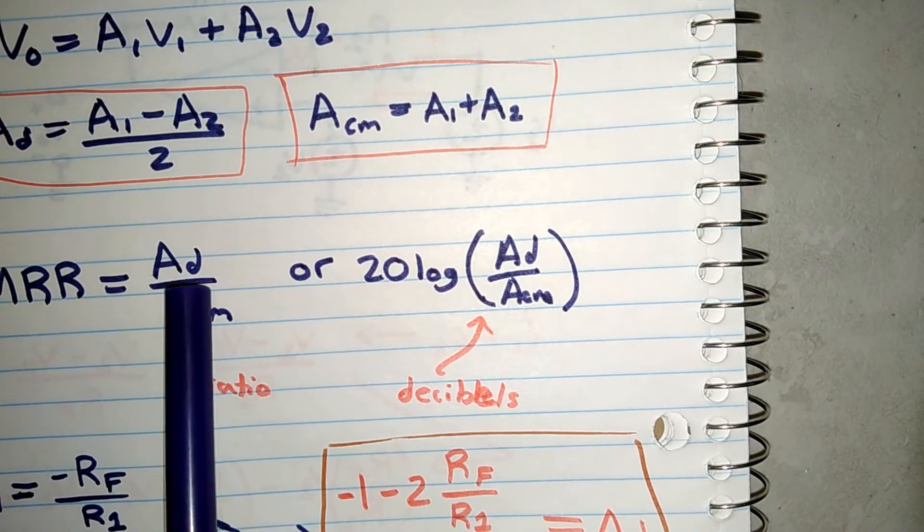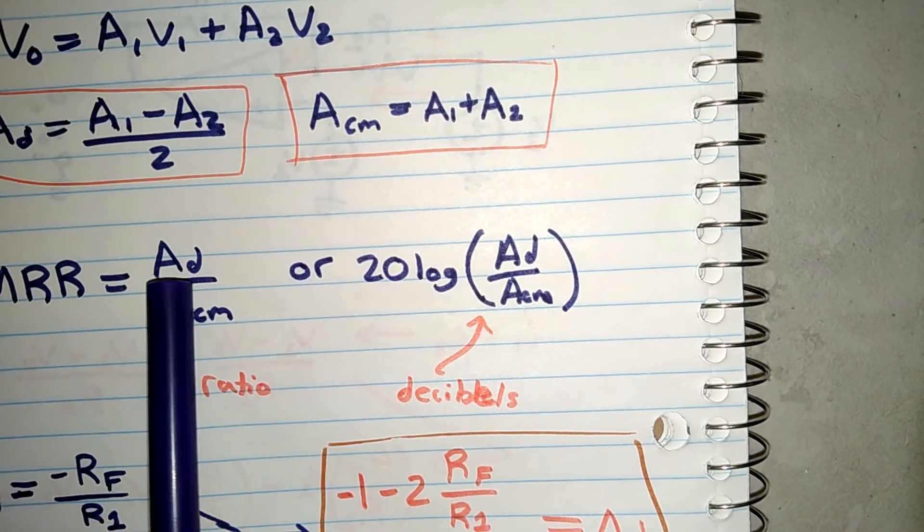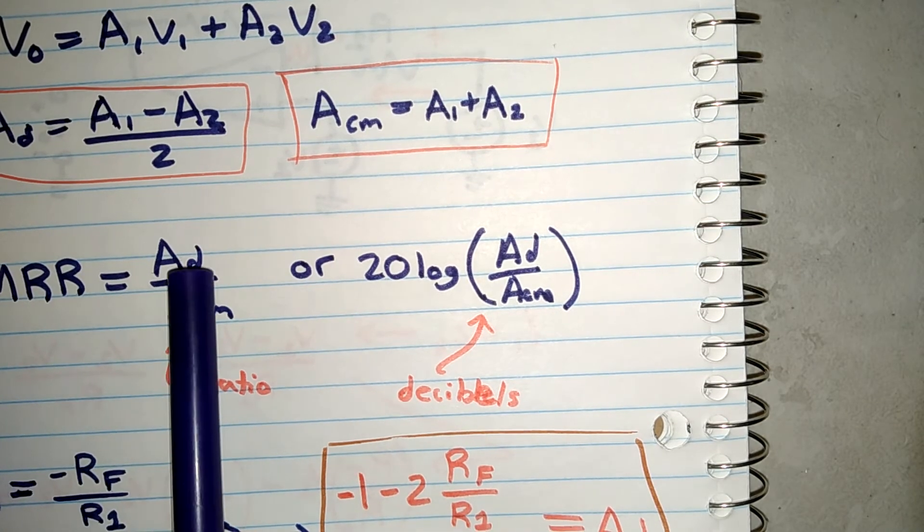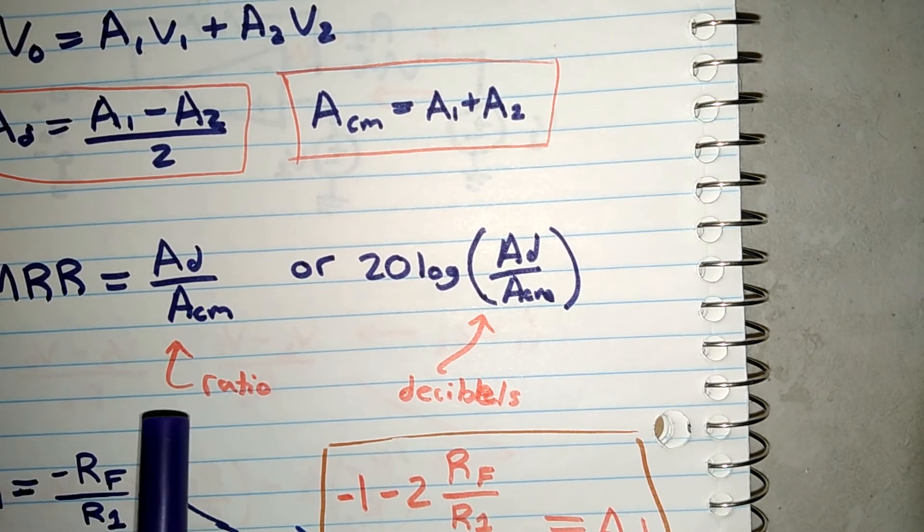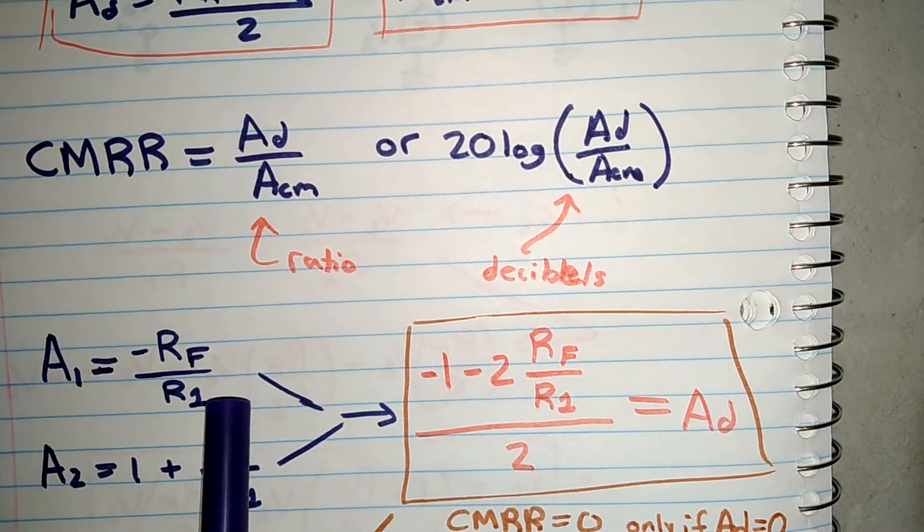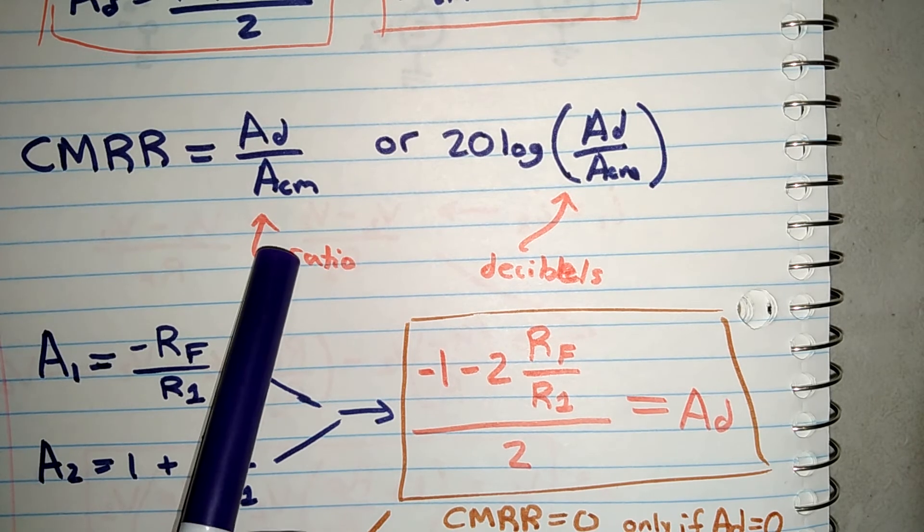So we cannot have a differential amplifier in this circuit that was shown before, using this method, to have a common mode reduction ratio of 0.